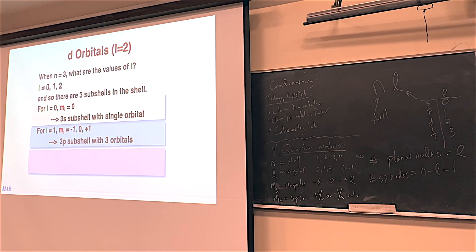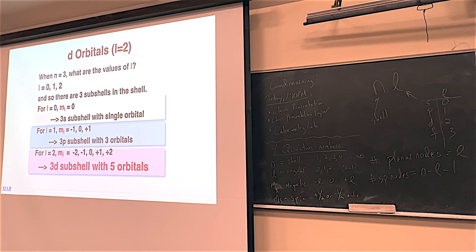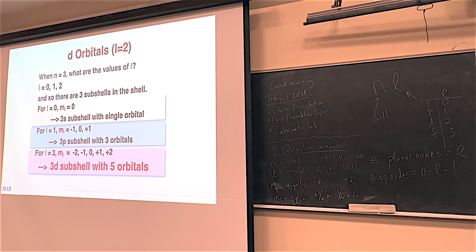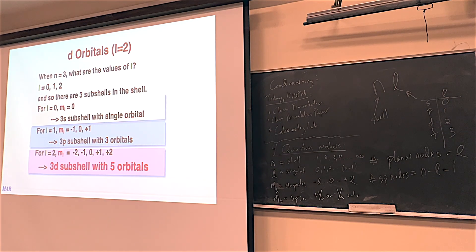The last house on the N equals 3 street is L equals 2. When L equals 2, M sub L goes from minus 2 to plus 2: minus 2, minus 1, 0, plus 1, plus 2 — five M sub L values. That means there are five orbitals in the 3D subshell. So notice: the 3S subshell has one orbital, the 3P subshell has three orbitals, and the 3D subshell has five orbitals. This is like a split-level house with a lot more rooms.